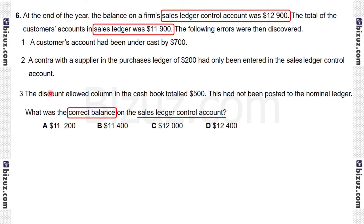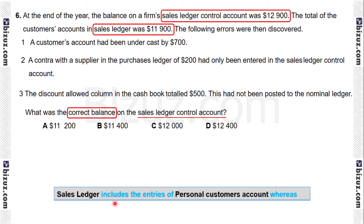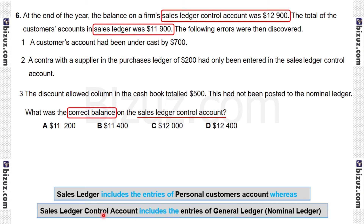There are three errors and we have to read them very carefully and adjust them against the sales ledger control account amount. First, we need to understand what is meant by the sales ledger control account and the sales ledger. The sales ledger includes entries of personal customer accounts, whereas the sales ledger control account includes entries of the general ledger — that means the nominal ledger. So we need to identify which entries belong to each.